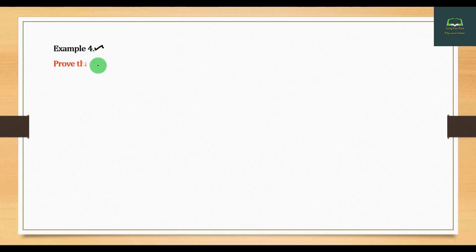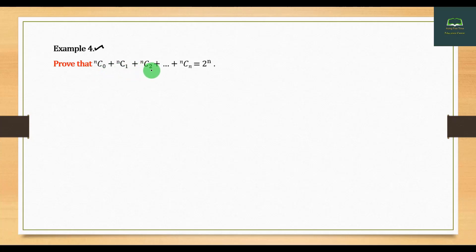HMF4. Product: nC0 plus nC1 plus nC2 plus and so on plus nCn. The polynomial coefficient of bounding is 2 to the power n — the new job.